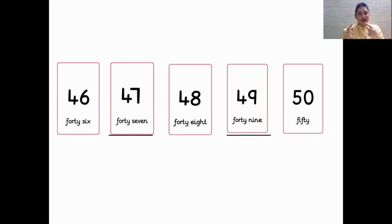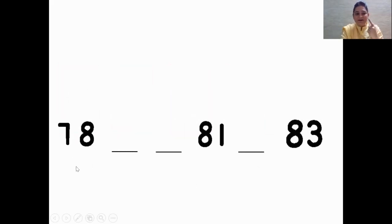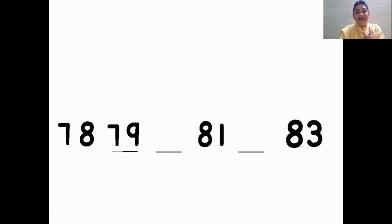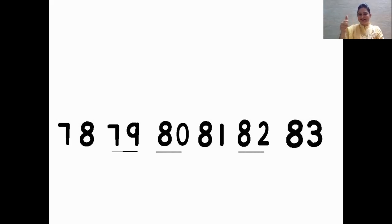Now let's do it one more time with different numbers. We can see here — 78. So tell me quickly children, which number is missing? What comes after 78? Think — 79. Very good. So 78, 79, and then 80. Very good. After 81 — let's see which number comes after 81 — 82. Very good children.